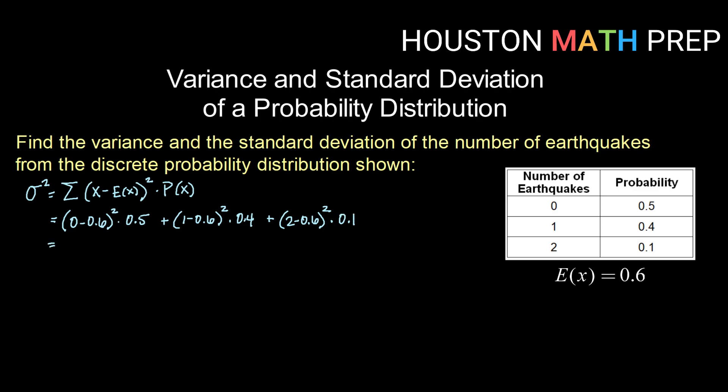So going ahead and calculating 0 minus 0.6 and squaring, we get 0.36, and then we'll still need to multiply by the probability 0.5. Plus, 1 minus 0.6 squared is 0.16 times 0.4. Plus, 2 minus 0.6 squared is 1.96, and then multiplying by 0.1.